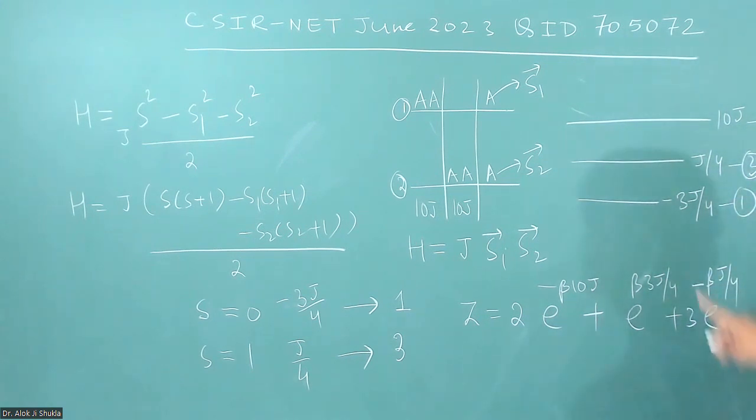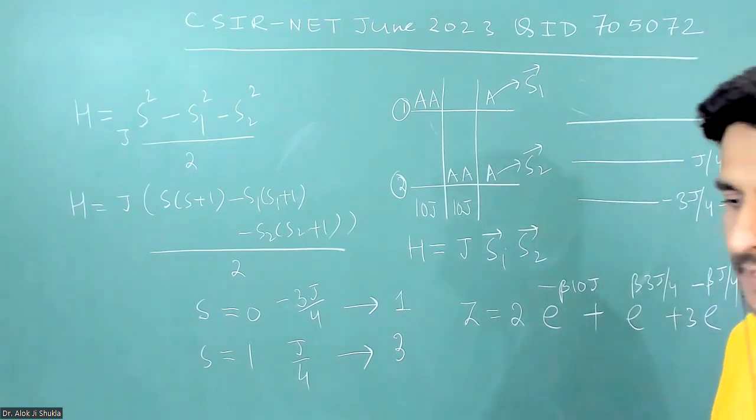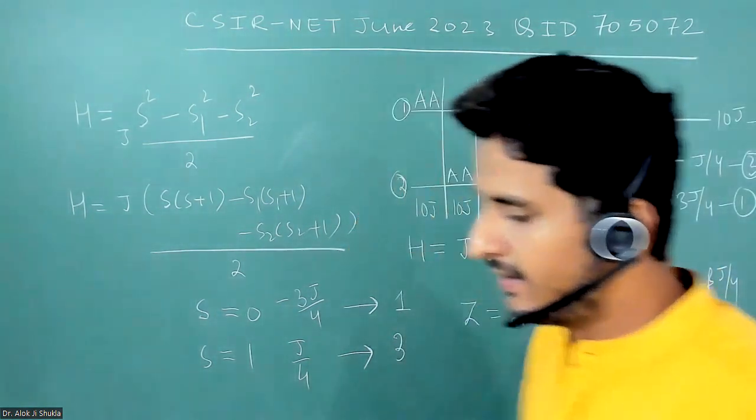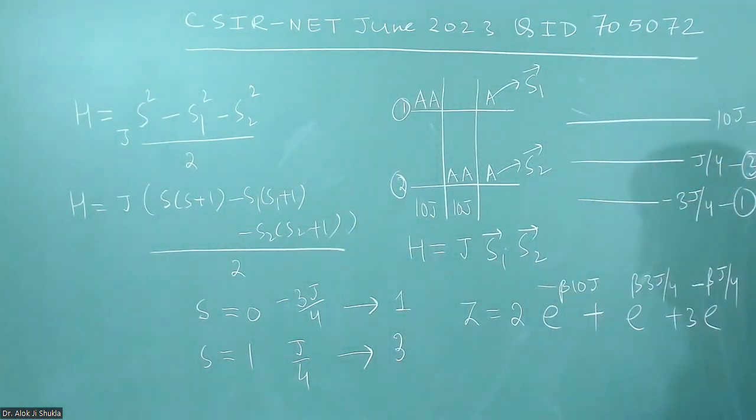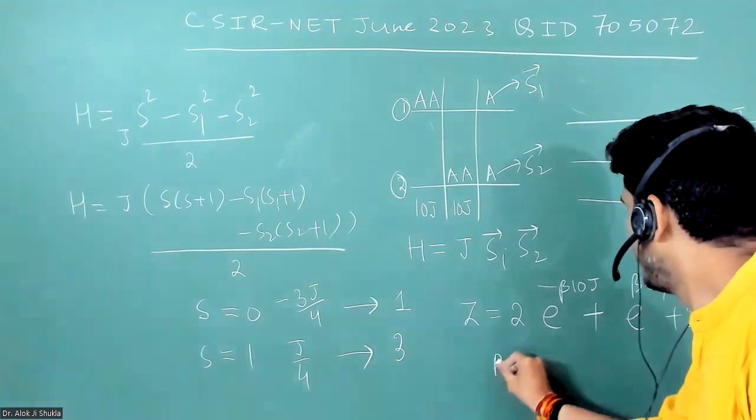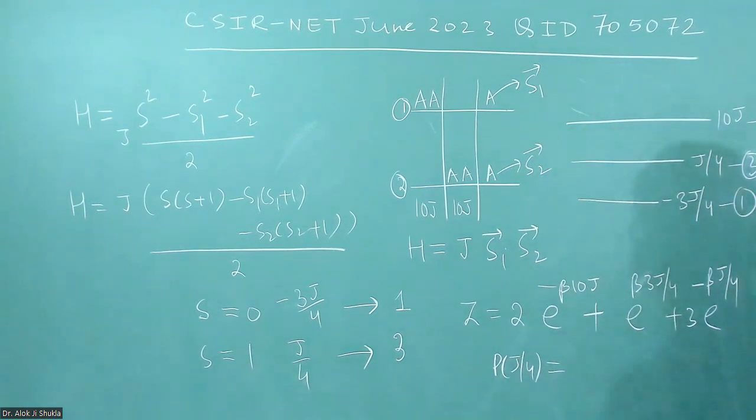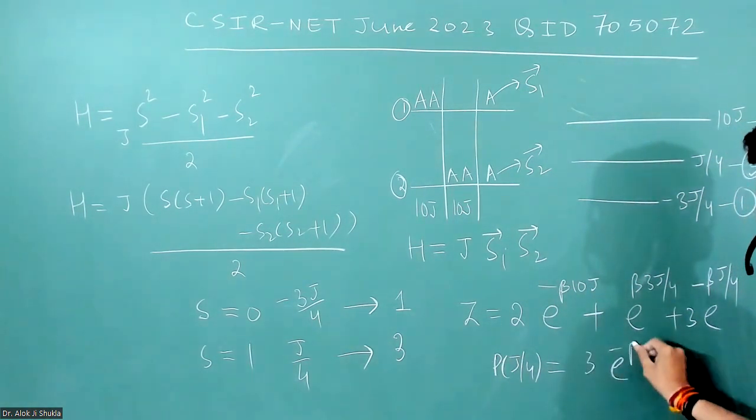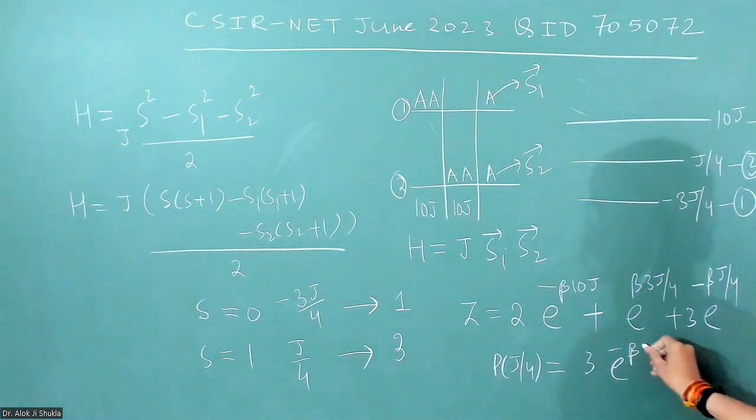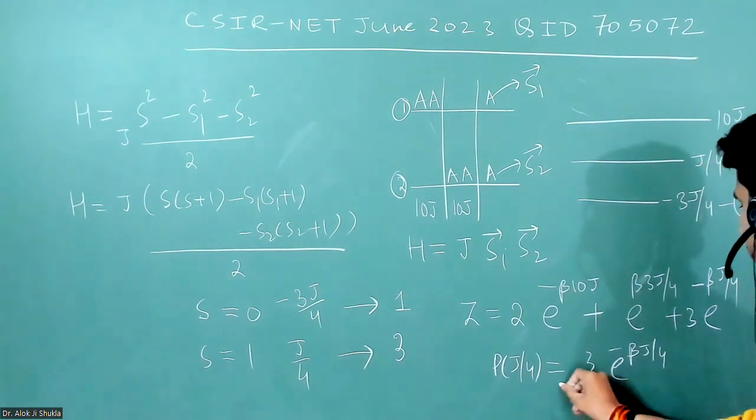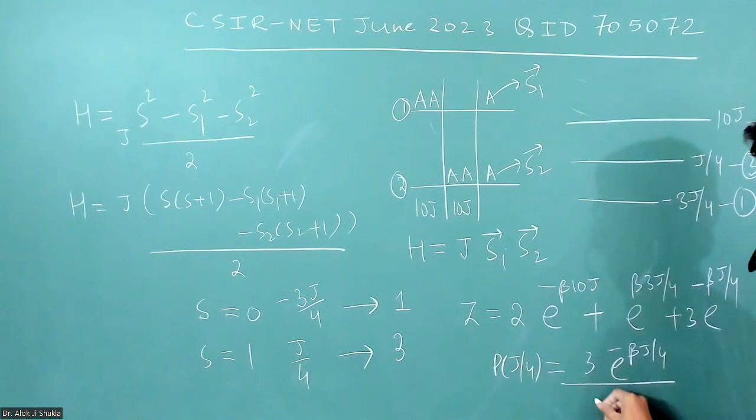So now you want the probability of being in a first excited state. So that probability of being in J by four will be given by three times E to the power minus beta J by four upon this Z. So this is the probability.